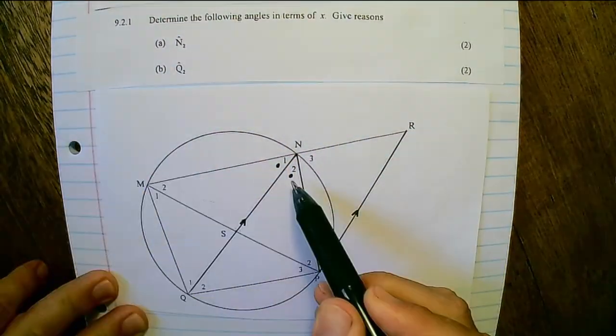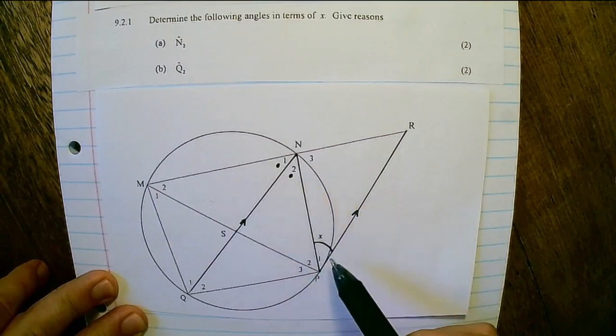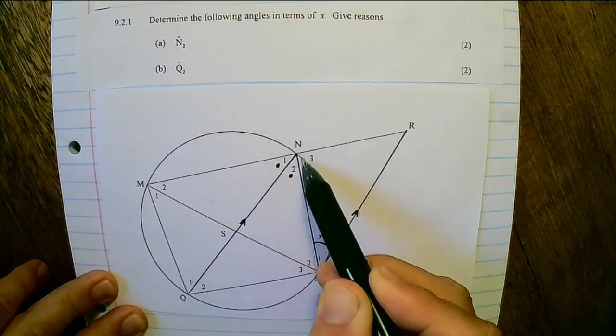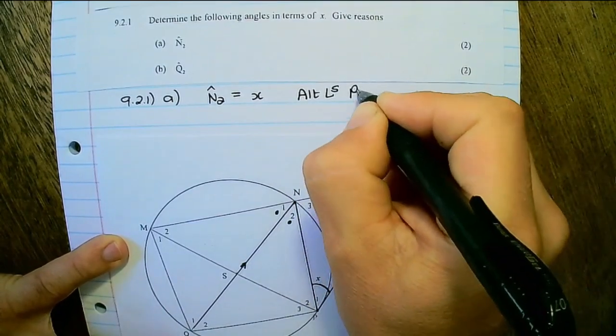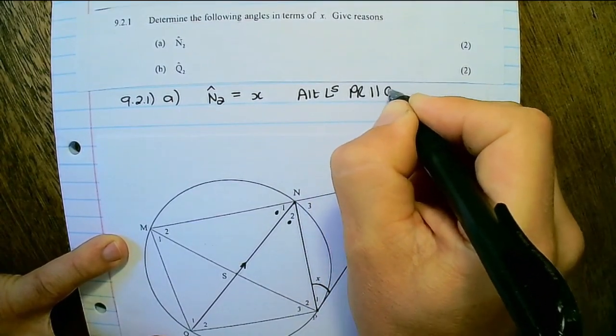Angle N2. So angle N2 is equals to X, alternate angles. And we say PR is parallel to QN.